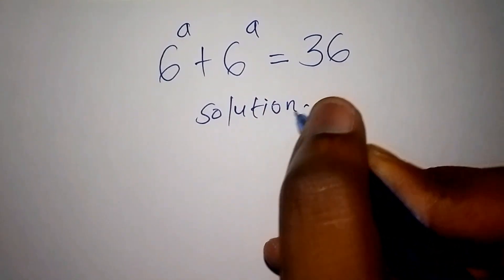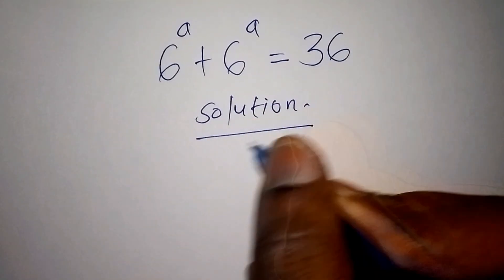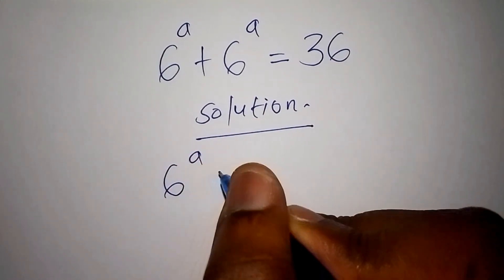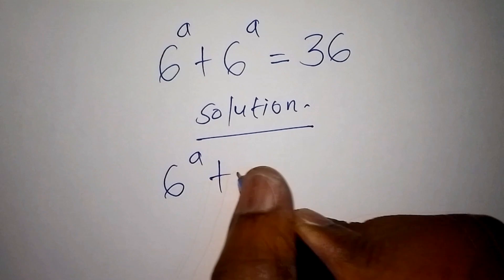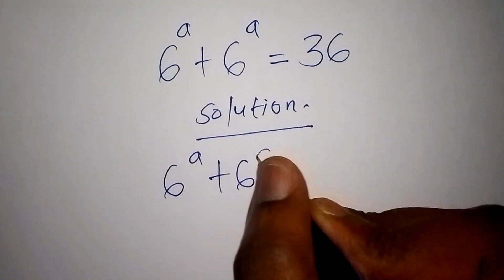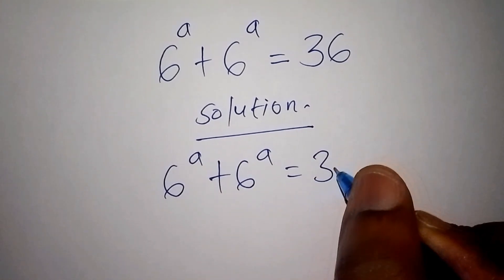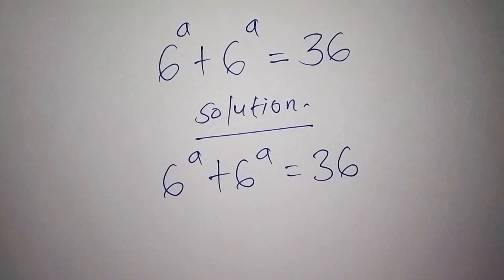On this maths problem, we have 6 to the power of a plus 6 to the power of a is equal to 36. So what is the value for a?